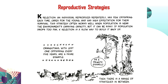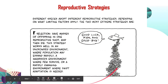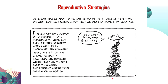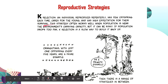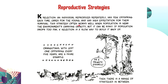The other reproductive strategy is K-selection, where K can be taken from 'carrying capacity.' In K-selection, parents have very few offspring but they care for their young. They will have only one or two offspring and take care of them until they grow into adulthood and can fend for themselves. Because parents are caring for the young during infancy, this ensures the offspring will reach adulthood.